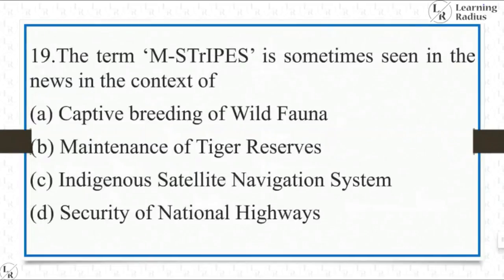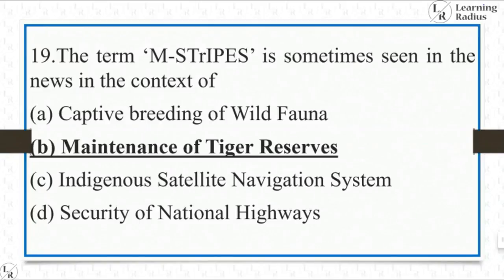The term M-Strips is sometimes seen in the news in the context of: captive breeding of wild fauna, maintenance of tiger reserves, indigenous satellite navigation systems, or security of national highways. It's a very easy and direct question. M-Strips is seen in the news in the context of maintenance of tiger reserves — the Android-based monitoring software M-STrIPES is used across all tiger reserves of the country.